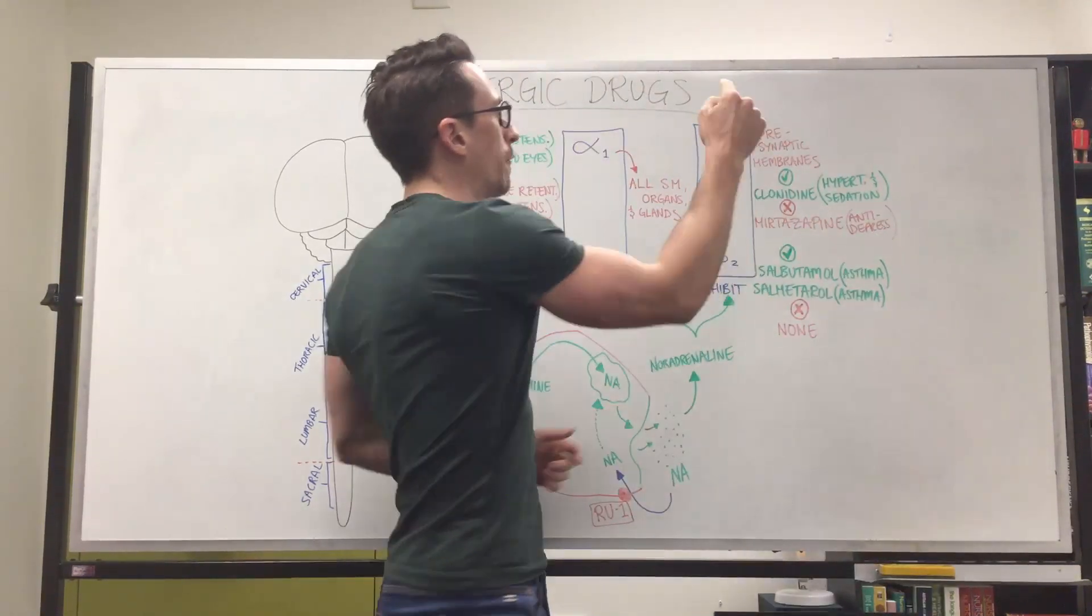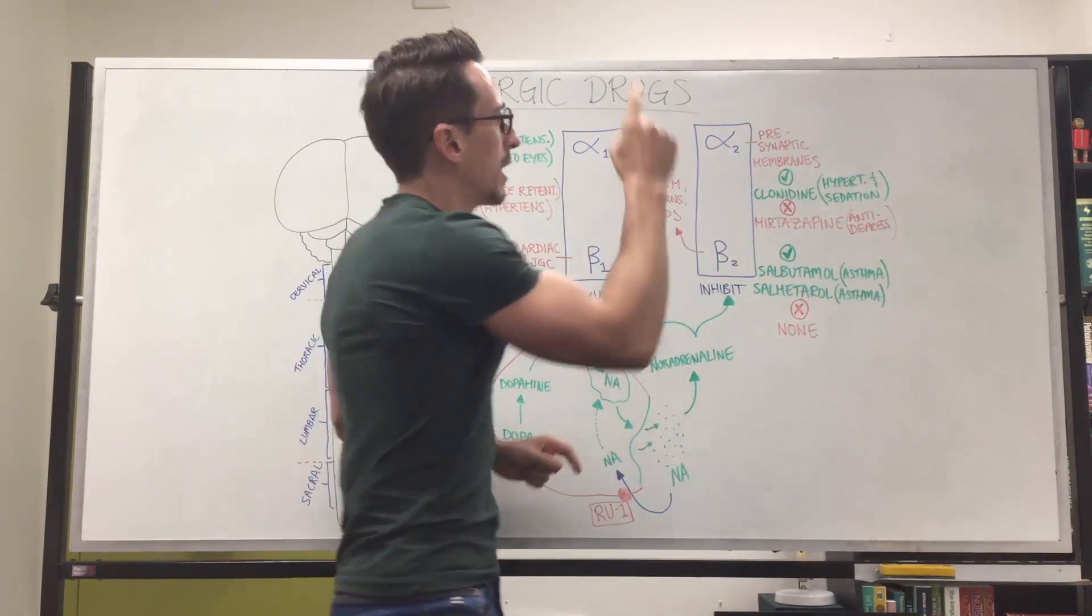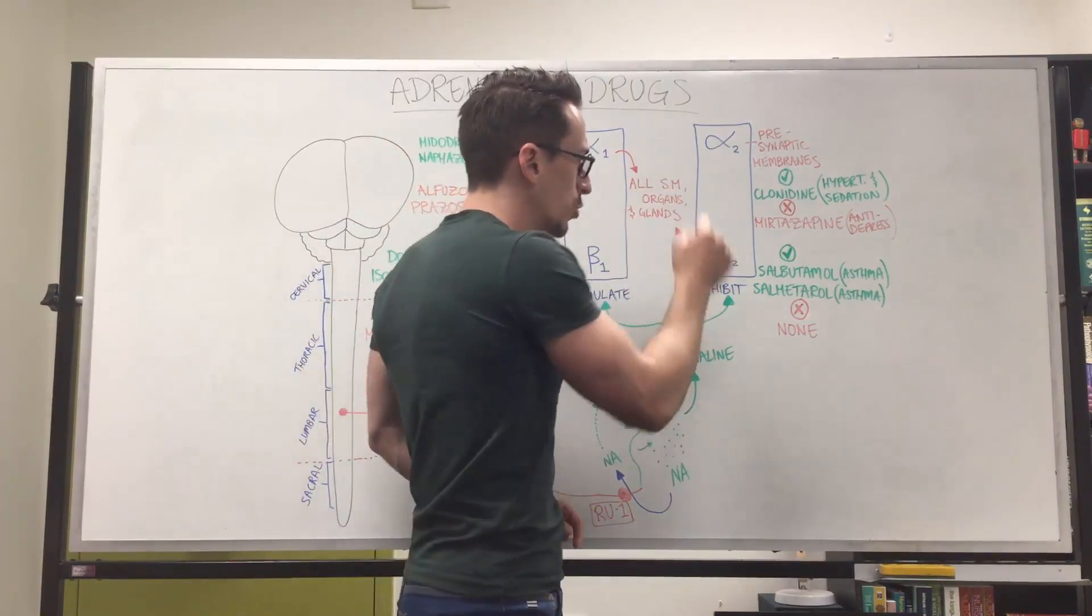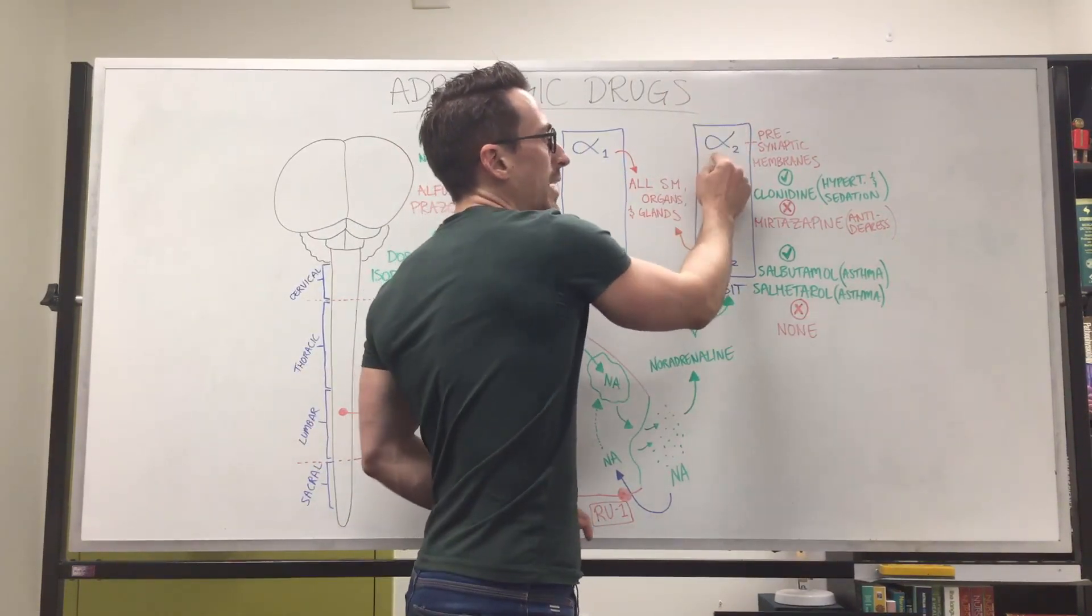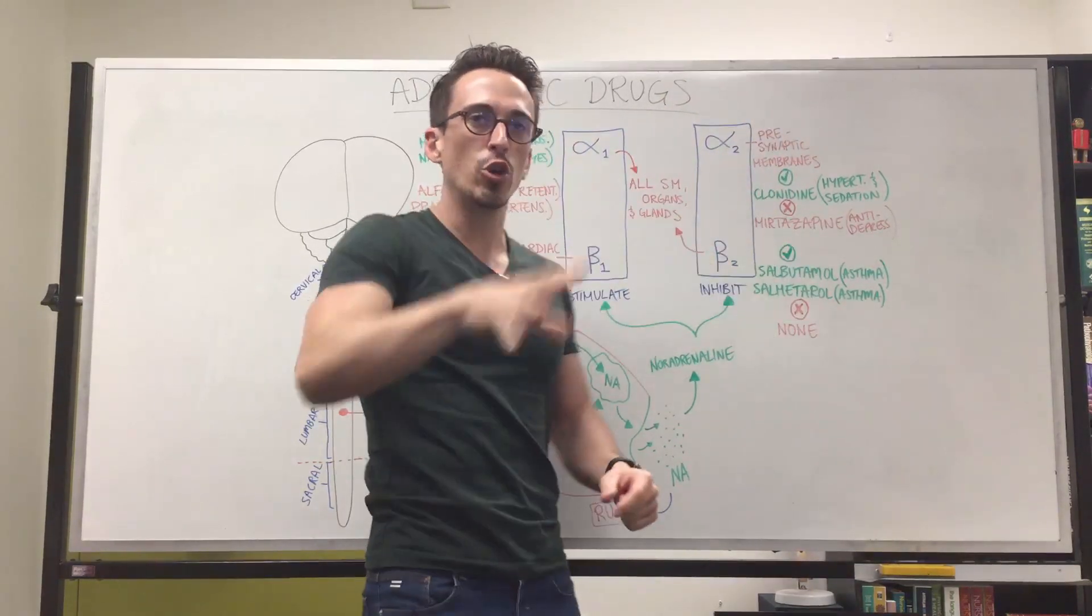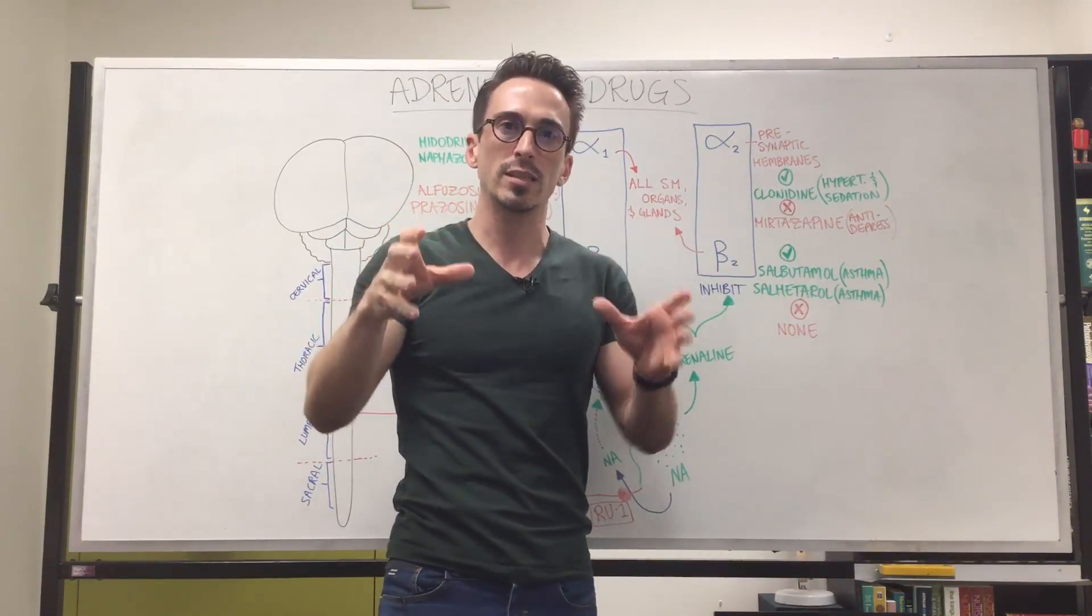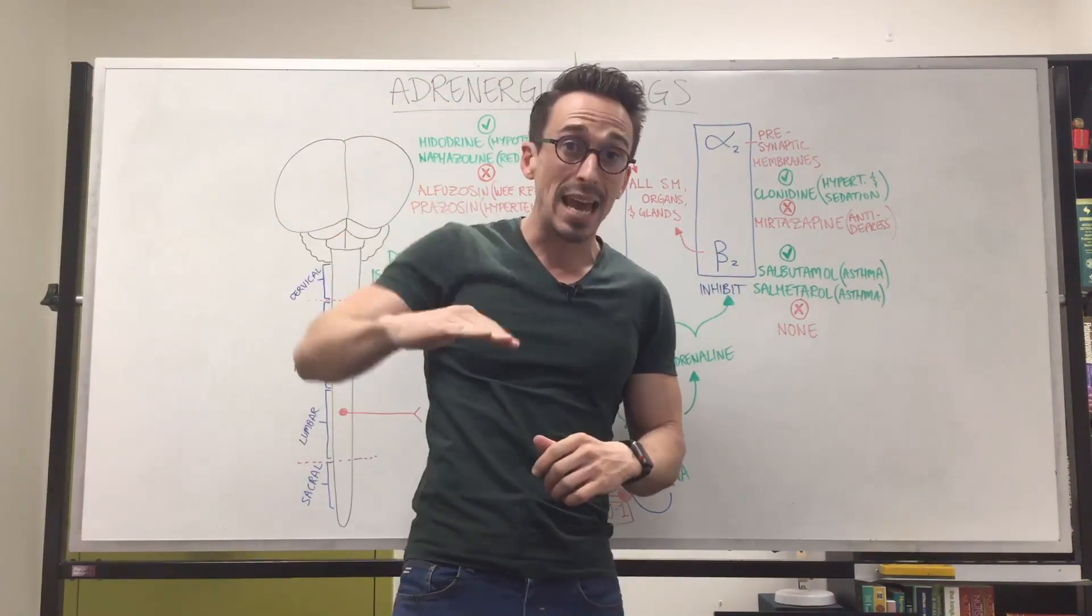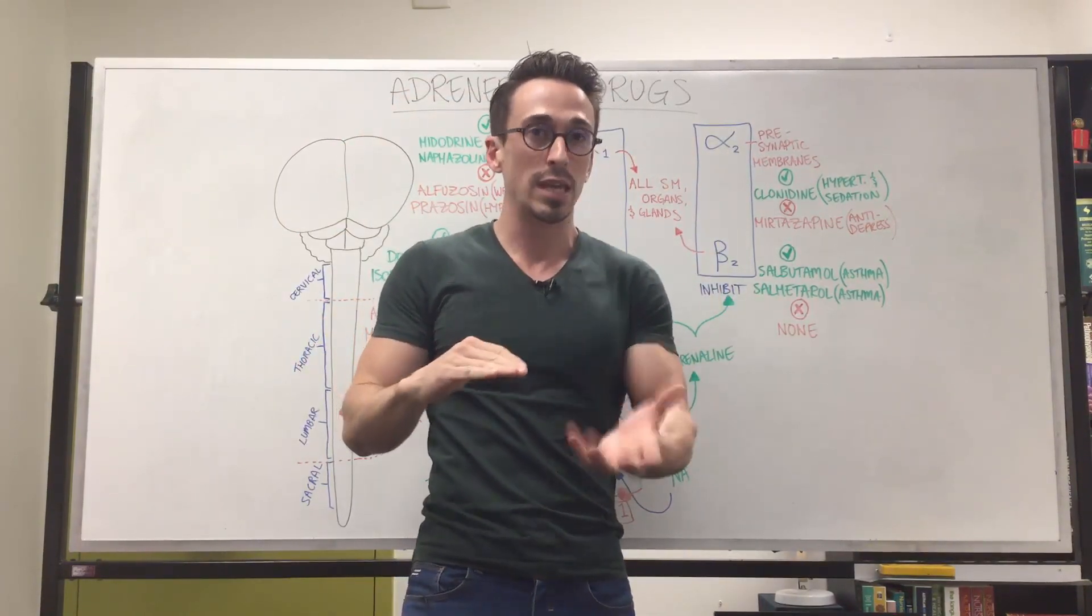Let's move on to alpha-2. Alpha-2, if you stimulate it, it actually has an inhibitory effect. Strangely enough, if adrenaline's released and stimulates alpha-2 receptors, it inhibits all the presynaptic neurons for the sympathetic nervous system. So basically, if you stimulate alpha-2, it's going to dampen down the effects of the sympathetic nervous system.